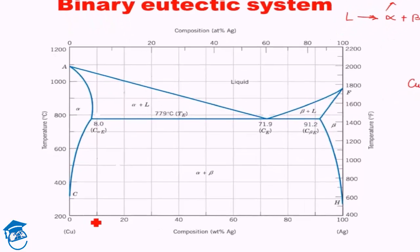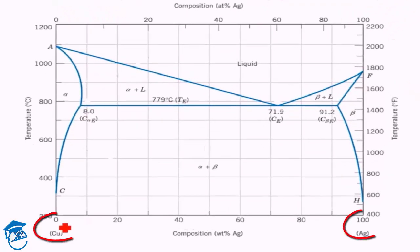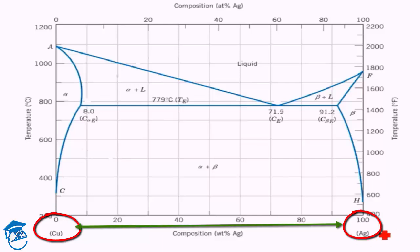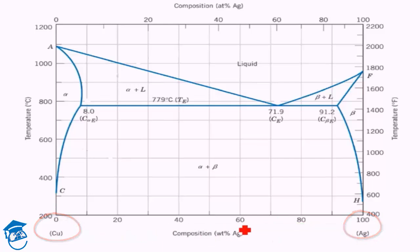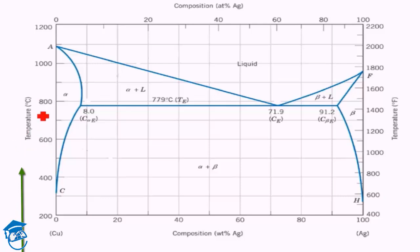In this diagram, the plot runs from 100% copper (0% silver) on one end to 100% silver (0% copper) on the other end. So the x-axis represents increasing percentage of silver. The y-axis is temperature, with one axis in degrees Celsius and the other in degrees Fahrenheit.